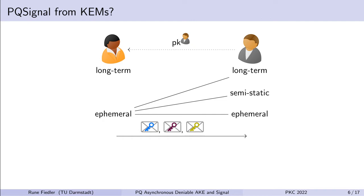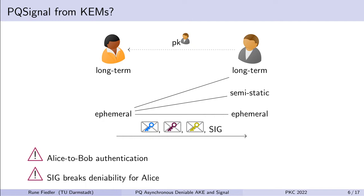How can we use this to construct a post-quantum version of Signal? Bob has three KEM key pairs: a long-term, semi-static, and ephemeral key pair. He sends all his public keys to Alice, and Alice encapsulates against each of Bob's public keys, then sends over the three resulting ciphertexts. The problem is there is no Alice-to-Bob authentication — Bob doesn't know if this really came from Alice or from Charlie. To remedy this, we could add a signature so that Alice signs the three ciphertexts. Now Bob can be sure the message came from Alice. However, Alice can no longer deny her involvement, because only Alice herself can compute this signature.